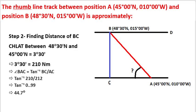Step 2 was finding distance BC. We found the change in latitude between 48 degrees 30 minutes north and 45 degrees north, which was 3 degrees 30 minutes. That equals 210 minutes, and therefore 210 nautical miles. Then angle BAC equals tan inverse of BC upon AC, that is tan inverse 210 upon 212, equal to tan inverse 0.99, which gives approximately 45 degrees.